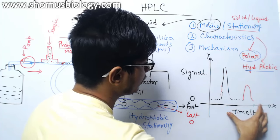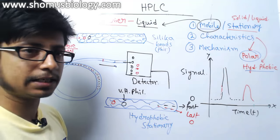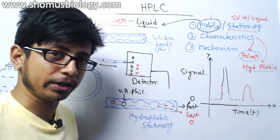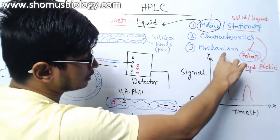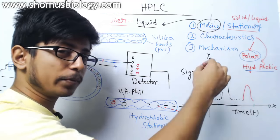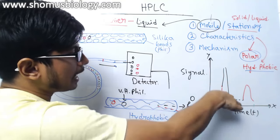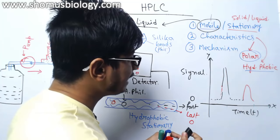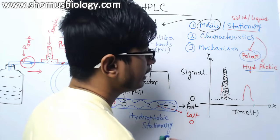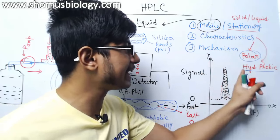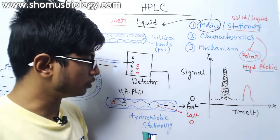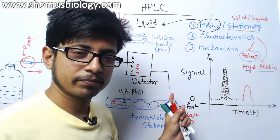On the x-axis we have time, and on the y-axis we have the strength of the signal, or the abundance and concentration of that molecule. The greater the height of the peak, the greater the concentration of that compound in the mixture. Not only the height, but also the area under the peak — calculating the whole area gives us an idea about the concentration, as it is exactly proportional to the concentration of the compounds in the sample.